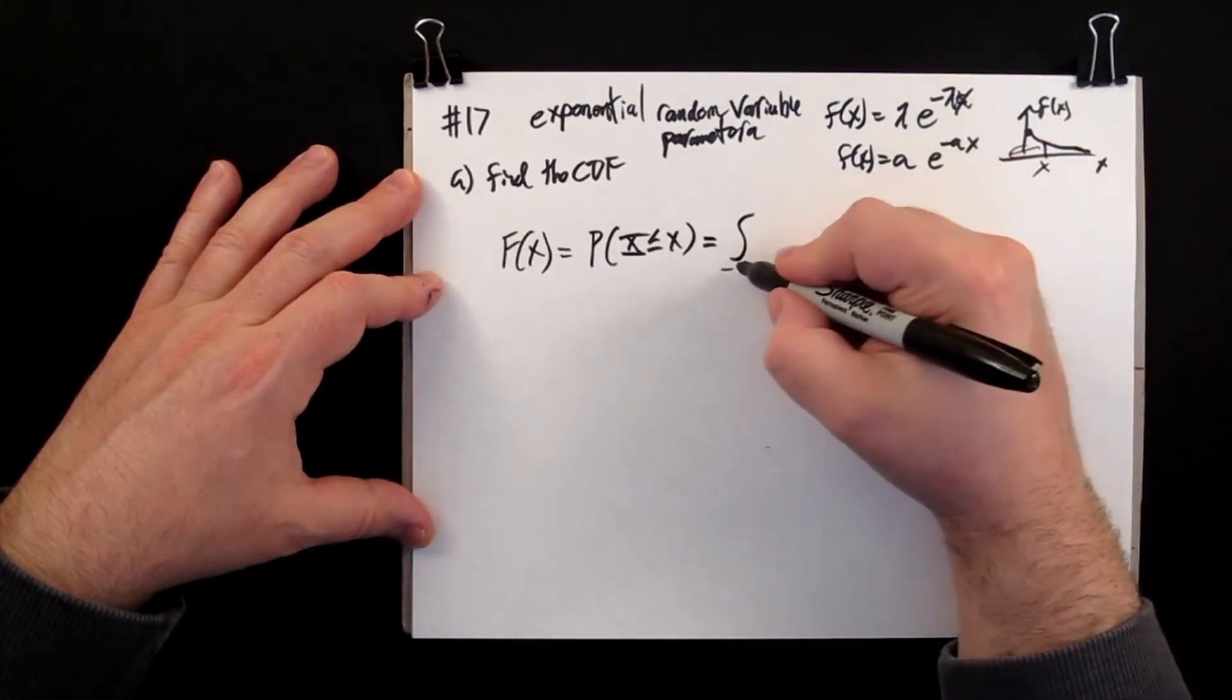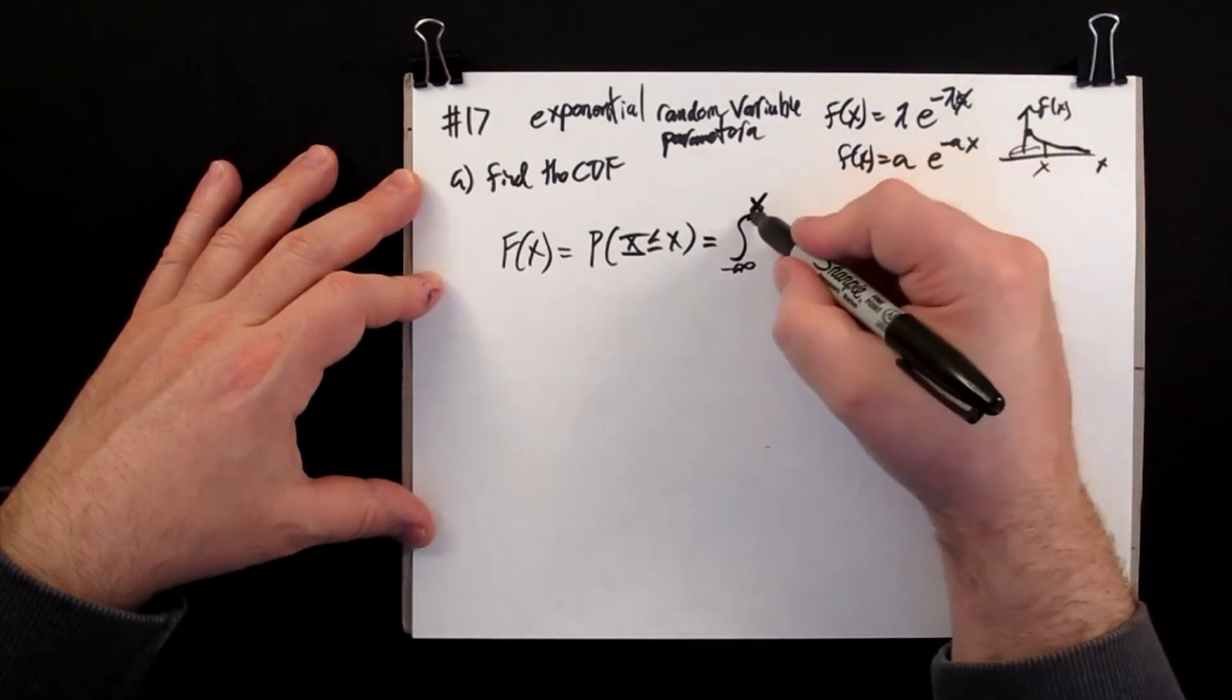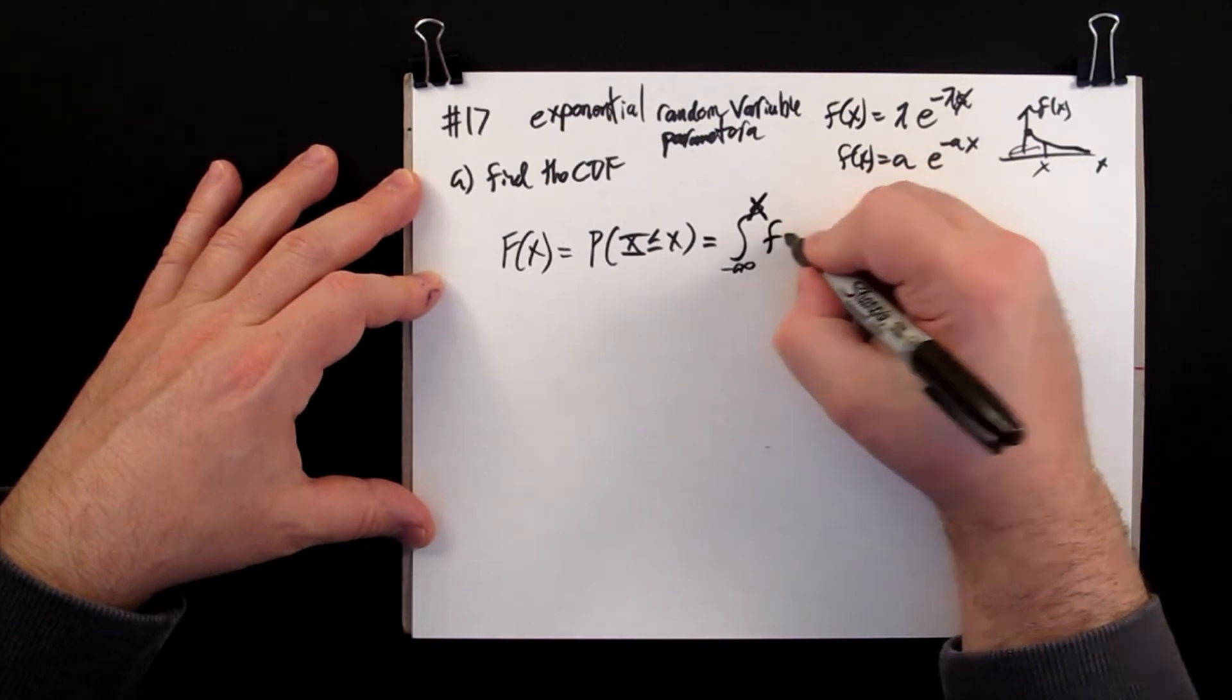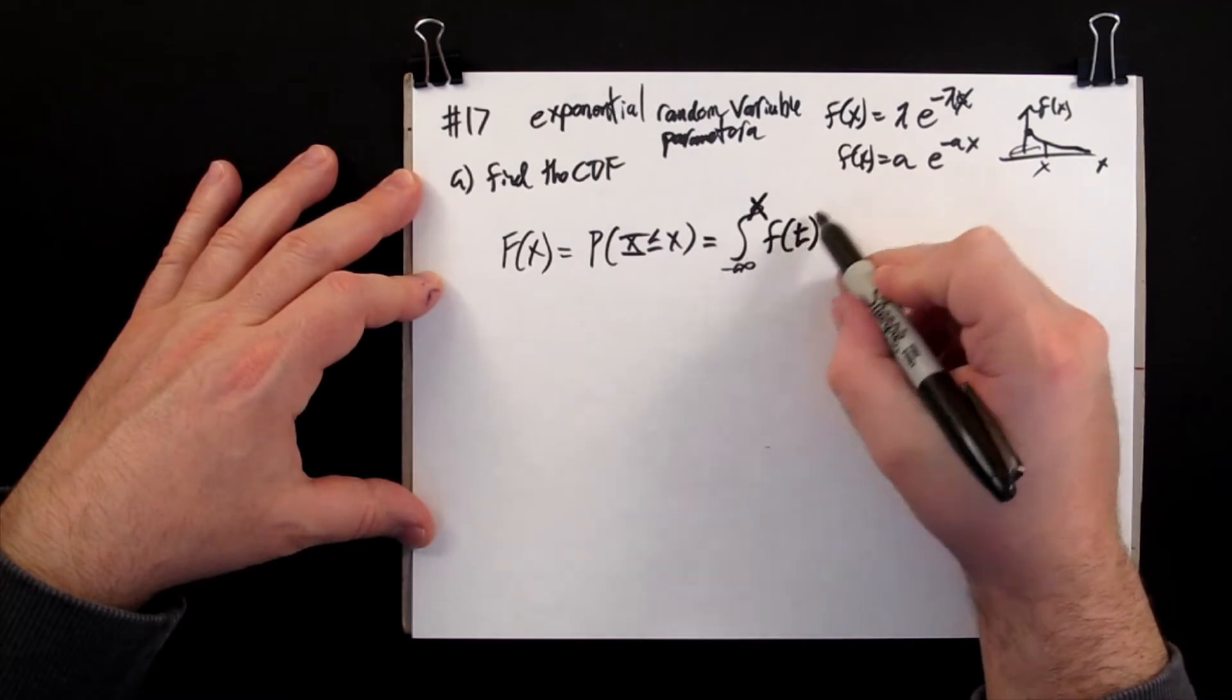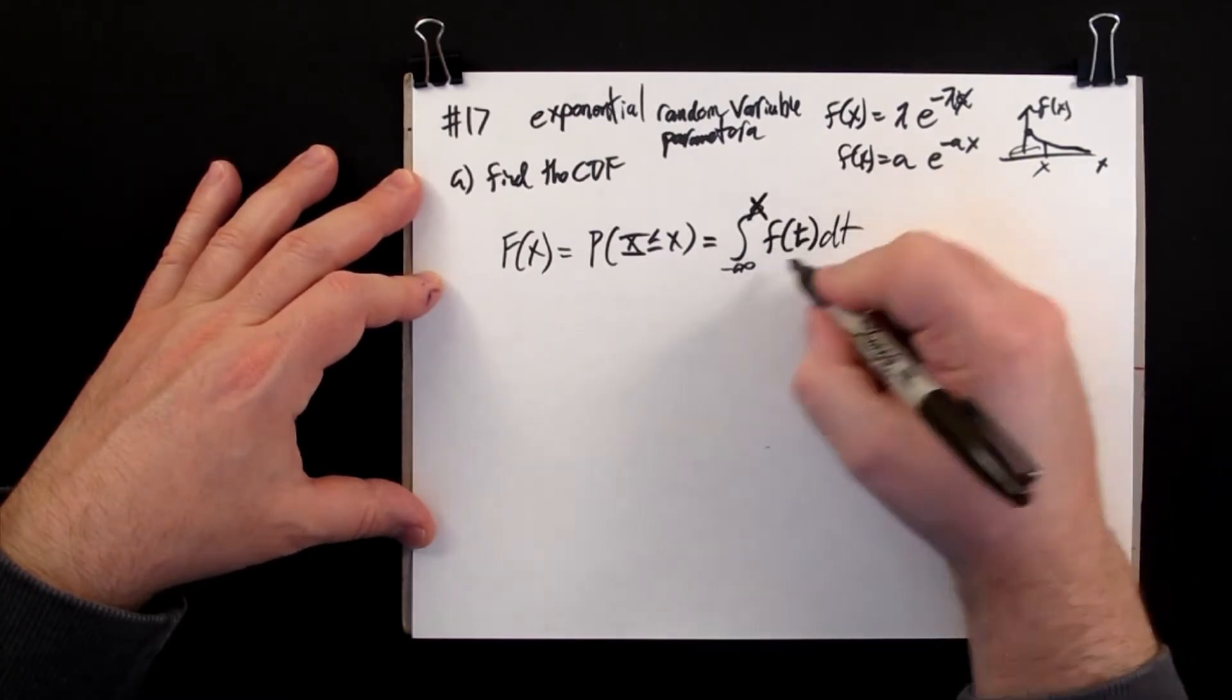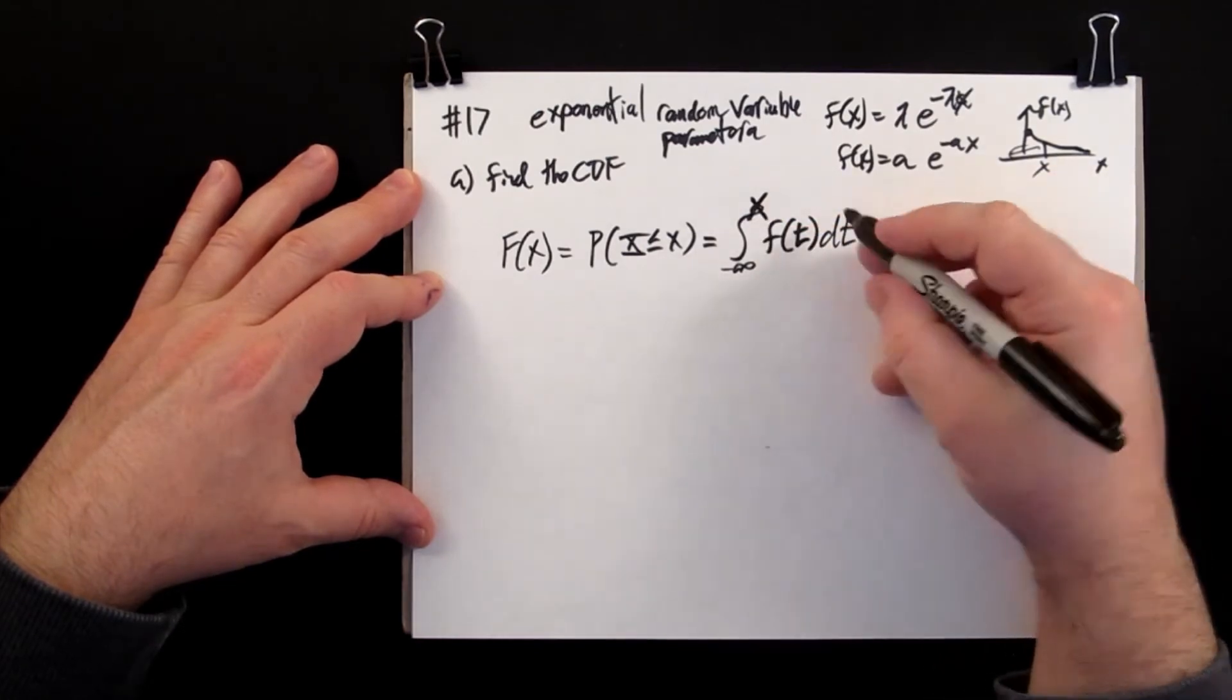Alright, describe that in terms of an integral. That's everything up to x in your probability density function, the area under that curve. I'm using t here just to differentiate from x.